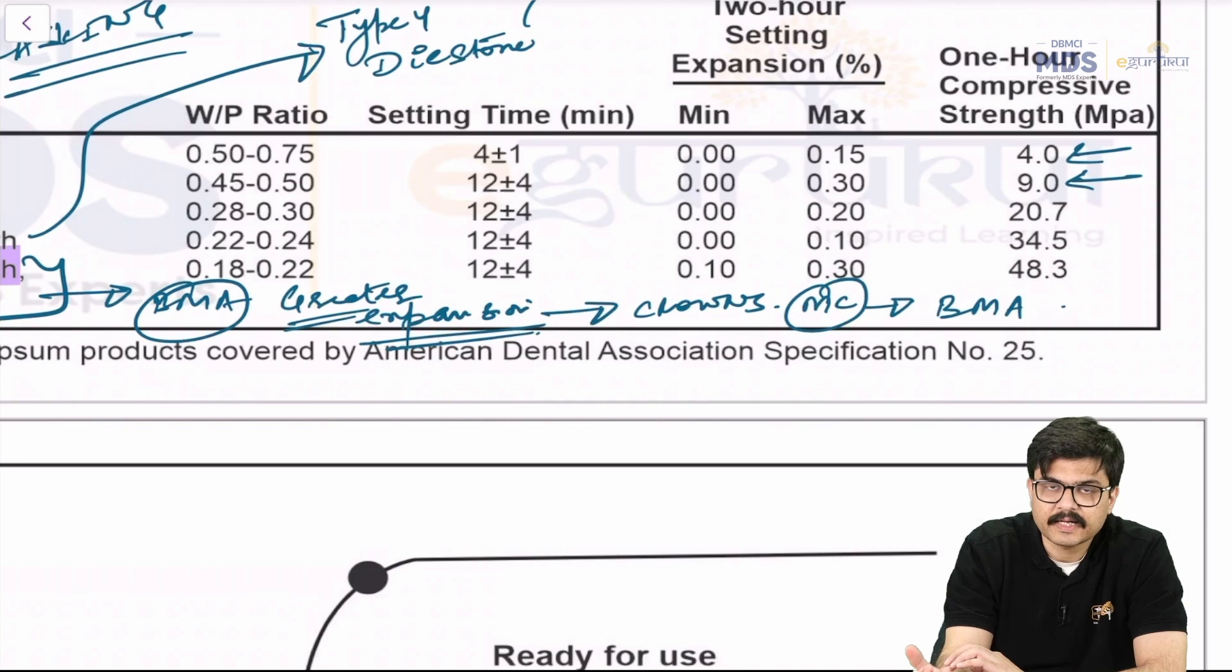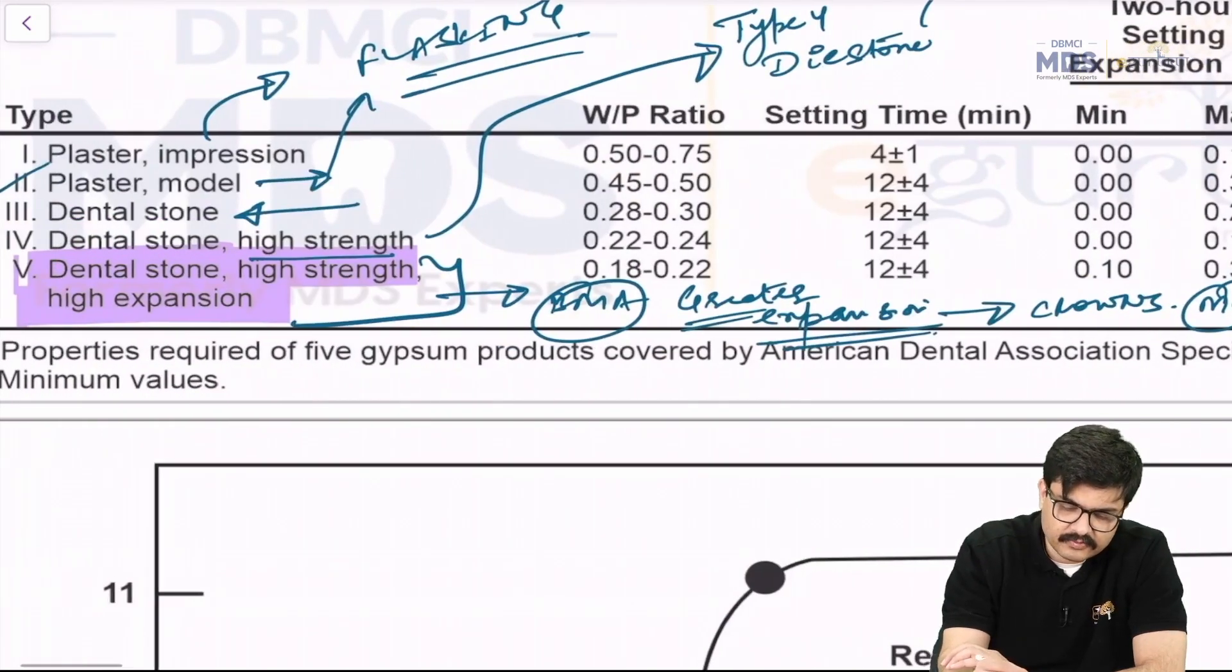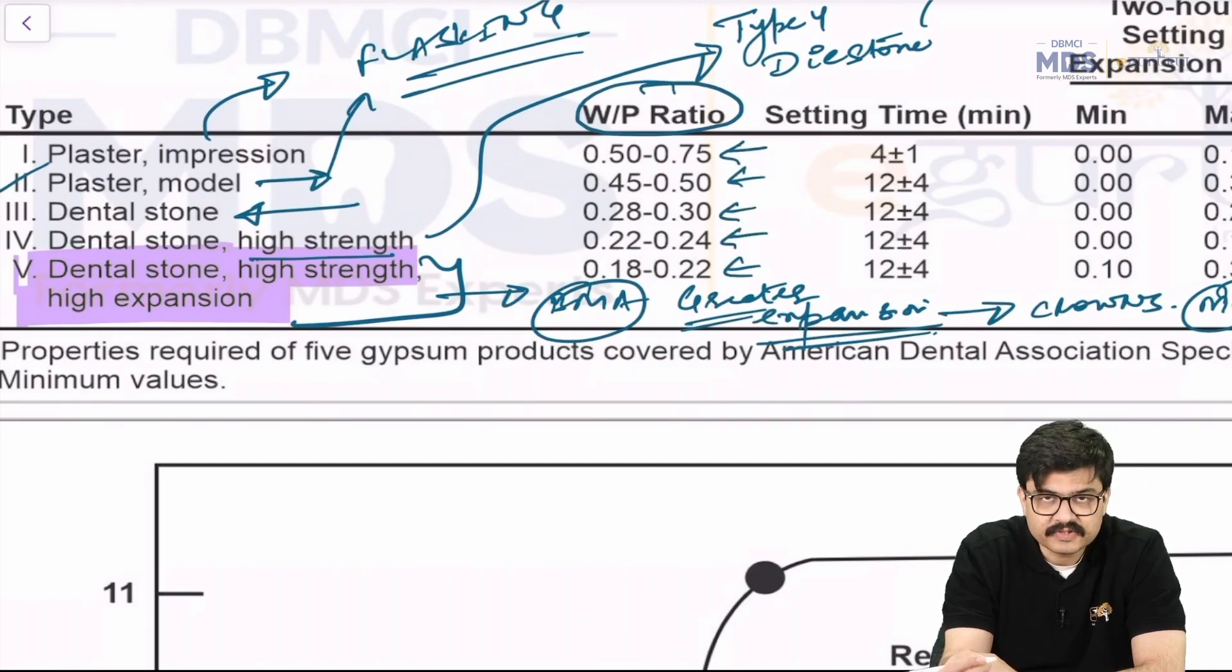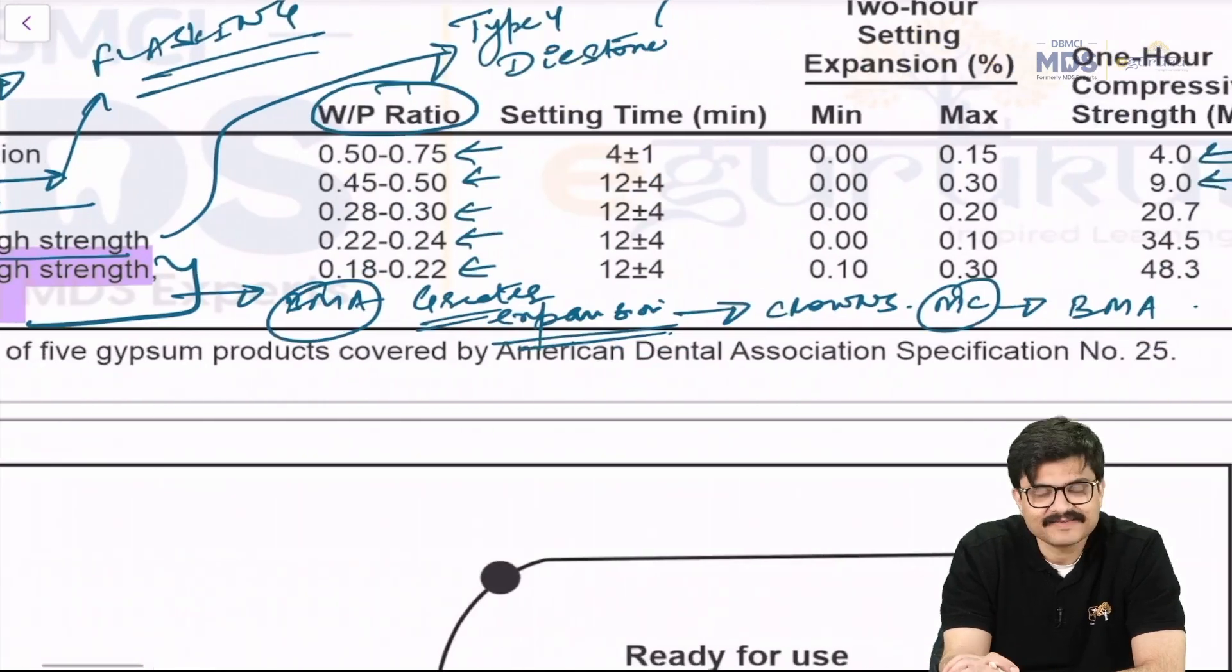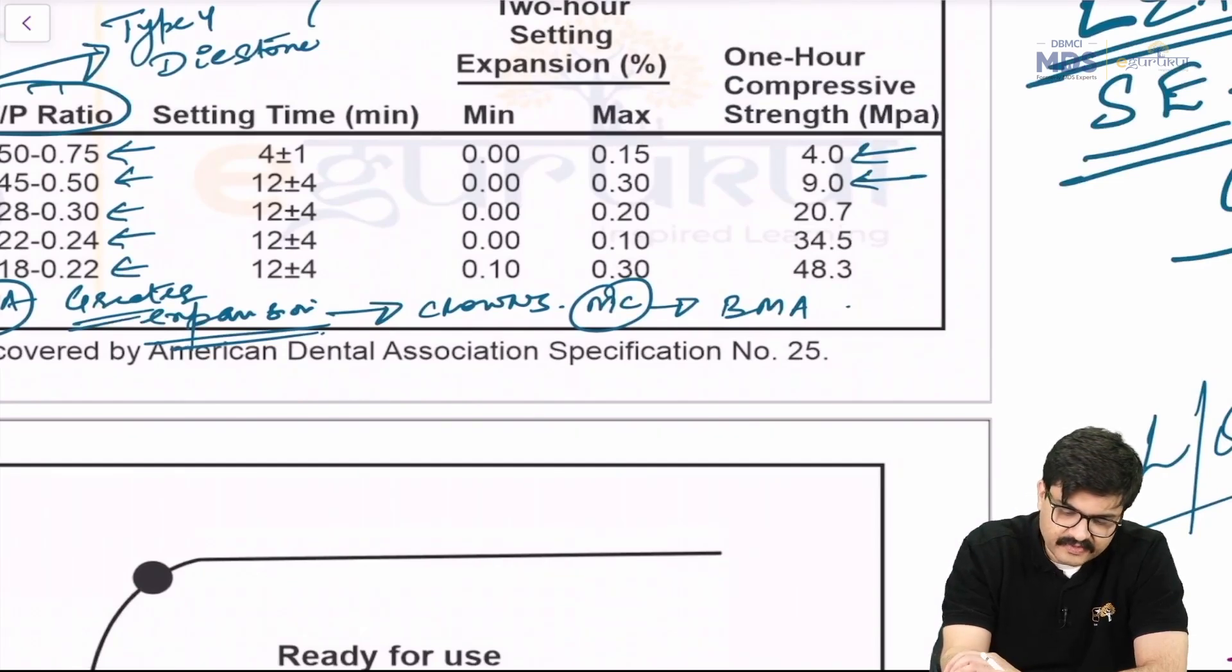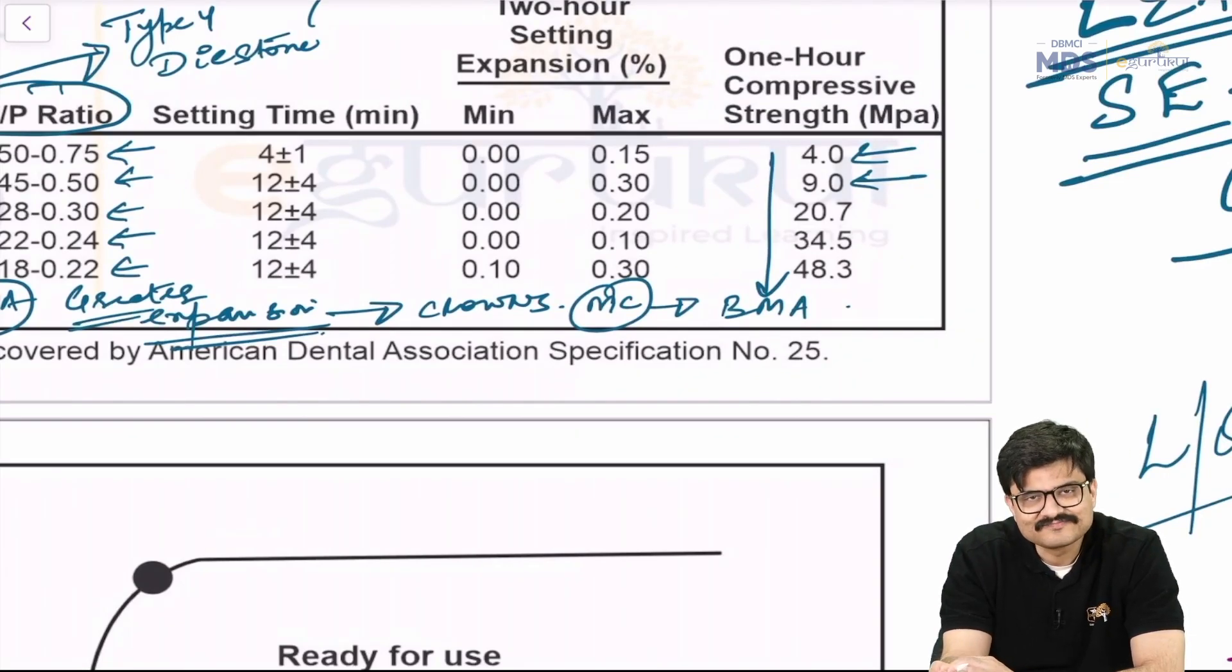So I think if you remember these points, then of course, you don't have to memorize the water-powder ratio values, but you should know the trend. You should know the trend. But from type 1 to type 5, the water-powder ratio keeps on decreasing. The compressive strength keeps on increasing as you go from 1 to 5, type 1 to 5.